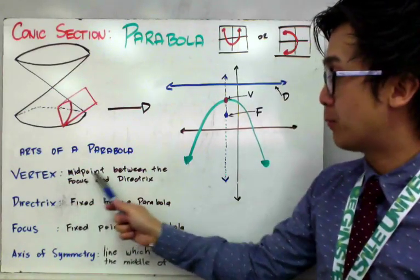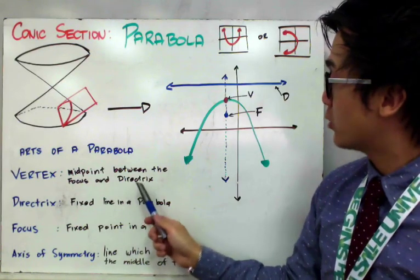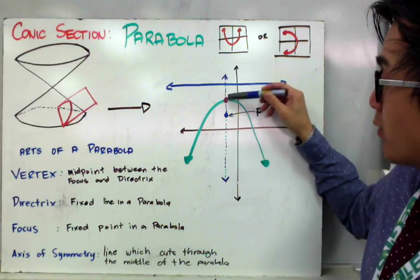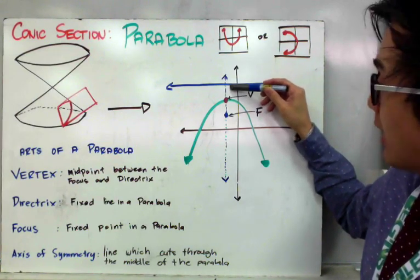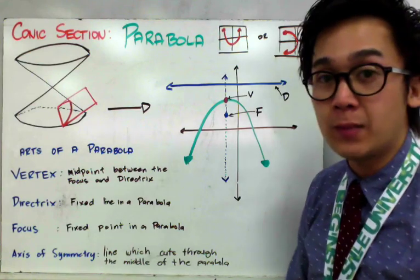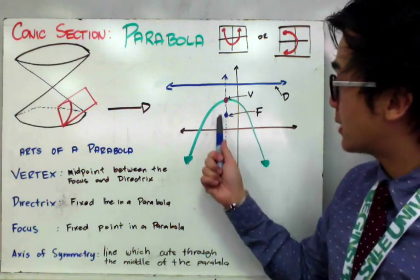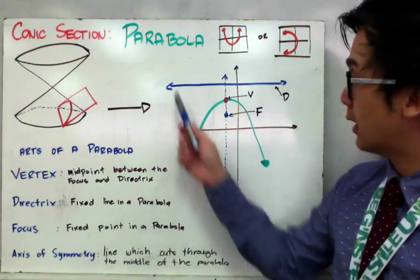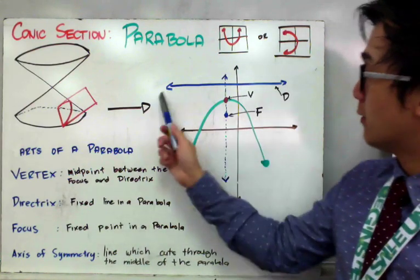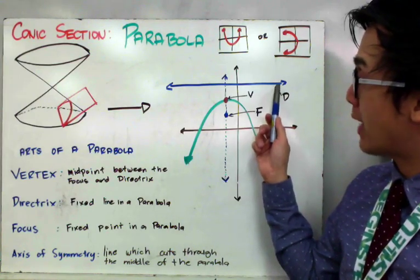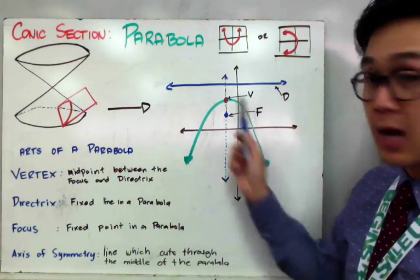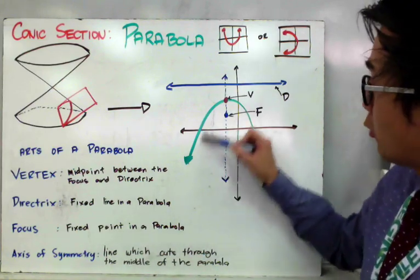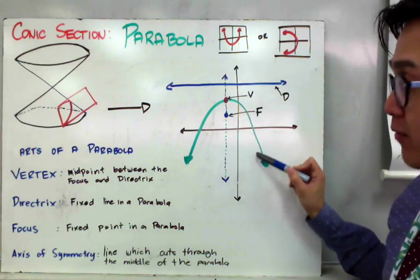The vertex is the midpoint between the focus and the directrix. Therefore, there is an equal number of units from the vertex to your directrix and from the vertex to your focus. The directrix is a fixed line in a parabola — it's your guide that the parabola will never cross. Your focus will be the fixed point inside the parabola, so it's always going to enclose your parabola when you're graphing.